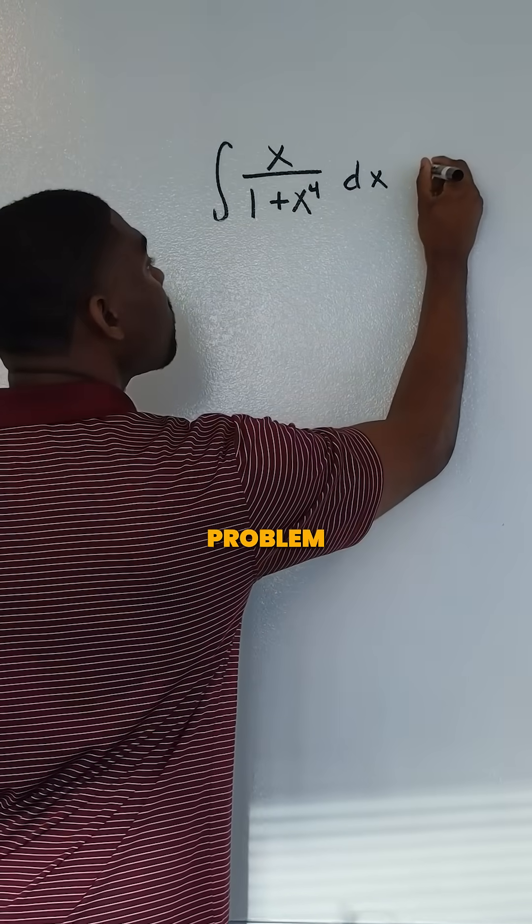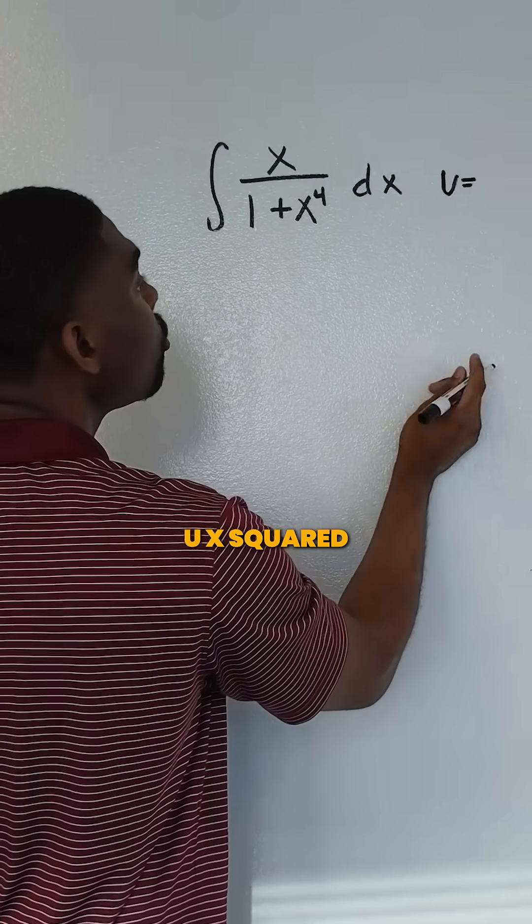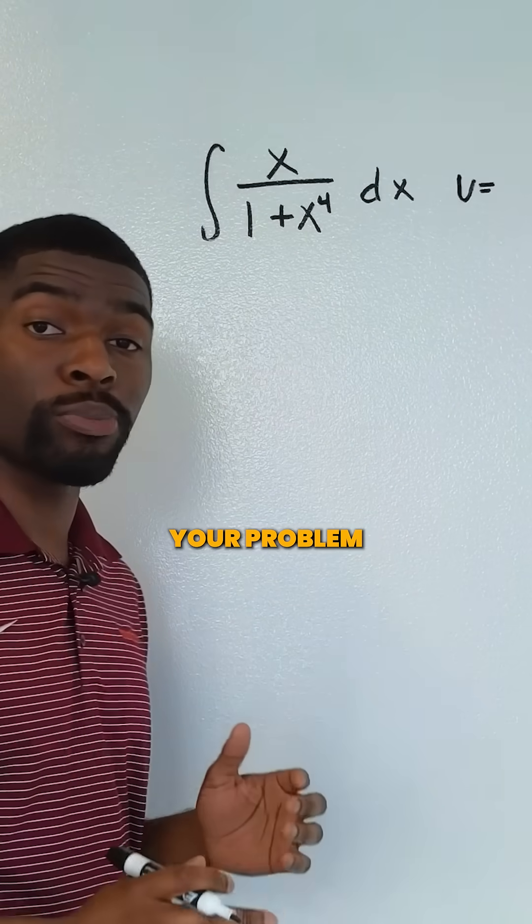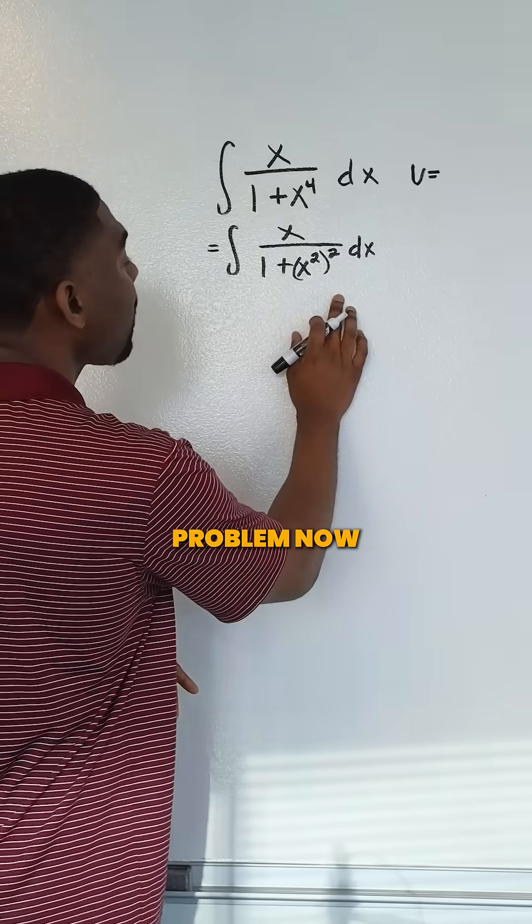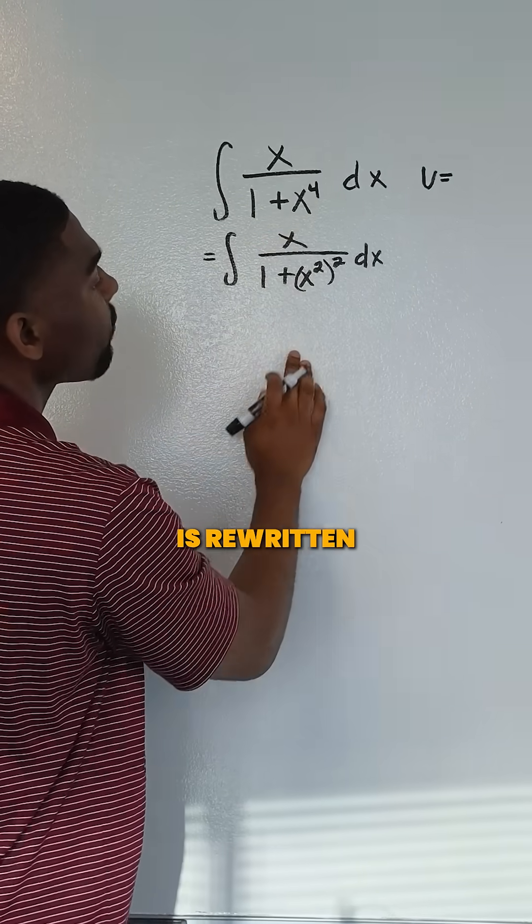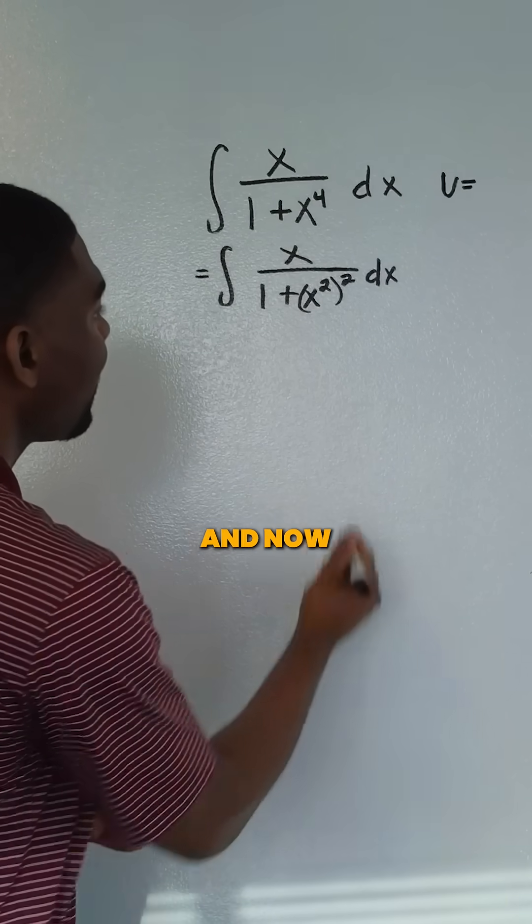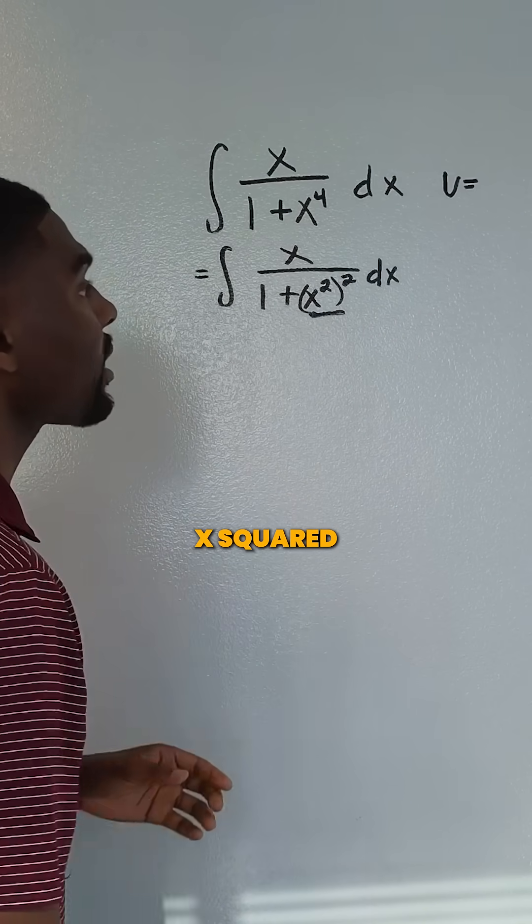This is a u substitution problem, and we start by making our u equal to x squared. If you can't see that, you would need to rewrite your problem like this. In this problem now we see that this x to the fourth is rewritten as x squared squared, which also equals x to the fourth. Now we can see that our u would be x squared.